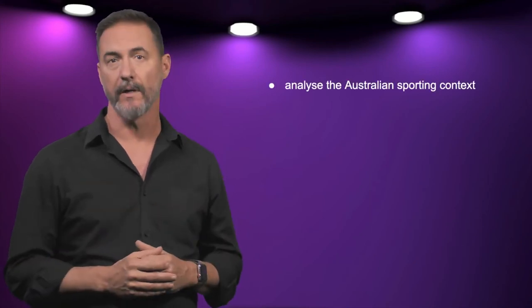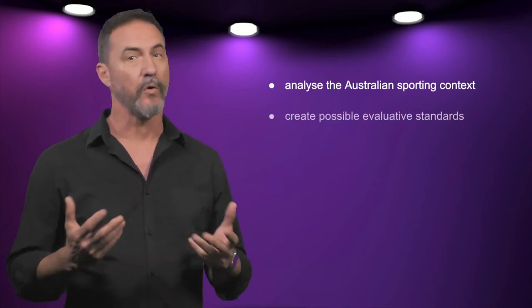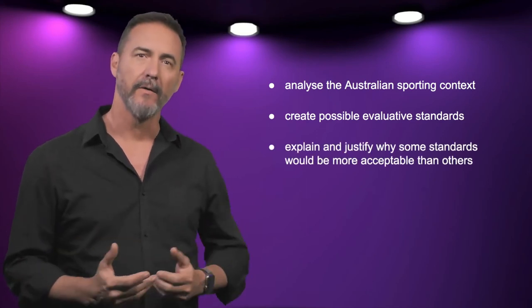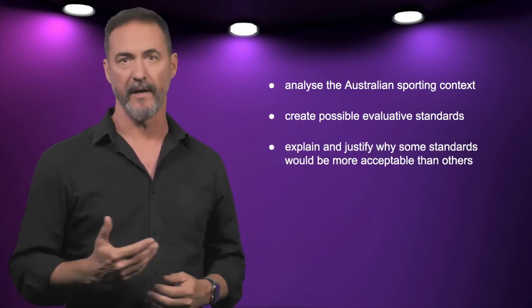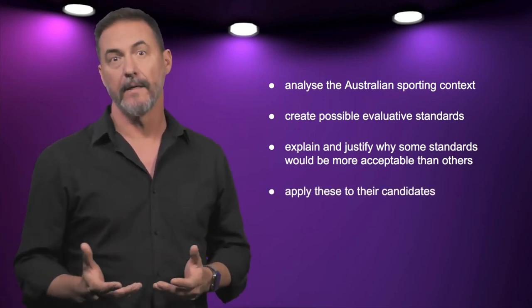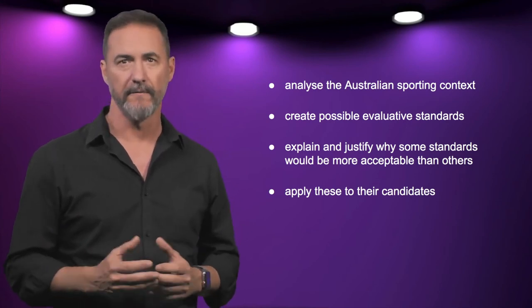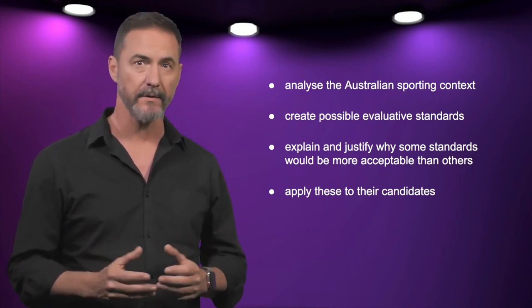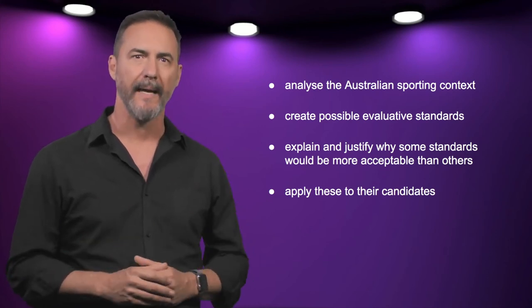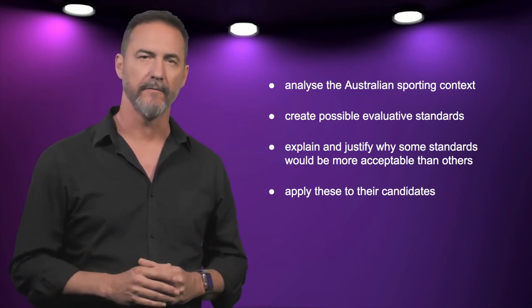Students need to construct their own criteria for greatness. To do so, they had to analyse the Australian sporting context, create possible evaluative standards, explain and justify why some standards would be more acceptable than others, and apply these to their candidates. They then needed to argue their case with their peers to develop criteria that were robust, defensible, widely applicable, and produced a choice that captured significant and relevant aspects of Australian sport.